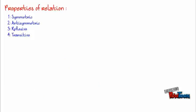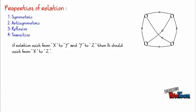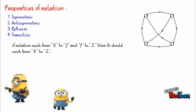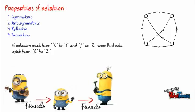Next property, transitive. For transitive property, if relation exists from a to b and b to c, then to show transitive property, relation should also exist from a to c.